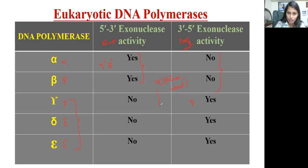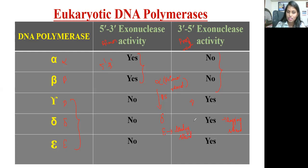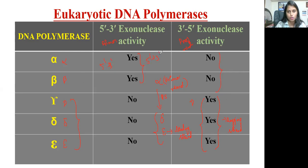After alpha, polymerase switching takes place — next come delta and also epsilon. Delta is involved in lagging strand synthesis, and epsilon is involved in leading strand synthesis. So the polymerase switching takes place from alpha, switching to delta and also epsilon. Gamma, delta, and epsilon have proofreading activity, while alpha and beta are the two enzymes having primer removal activity — that is five prime to three prime exonuclease activity.